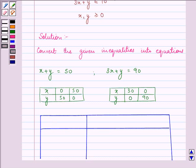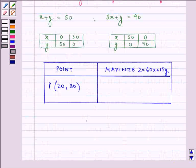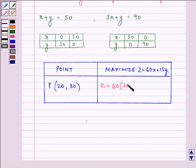At point P(20, 30), we calculate the maximum value of z = 60(20) + 15(30). This gives us 1200 + 450 = 1650. So when x = 20 and y = 30, we get the maximum value of z.